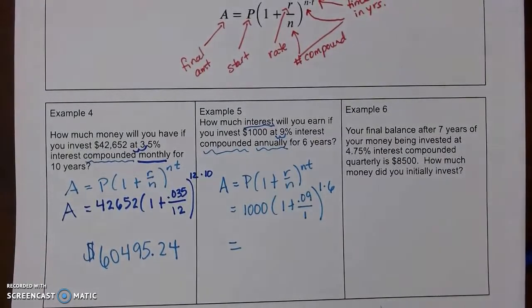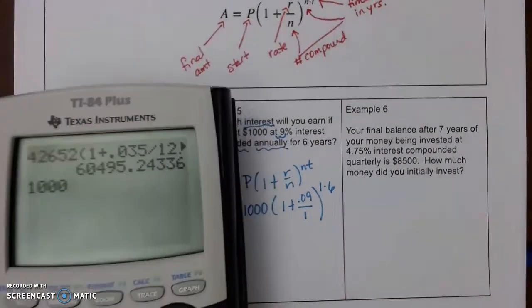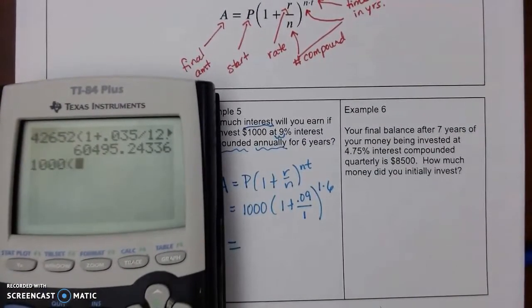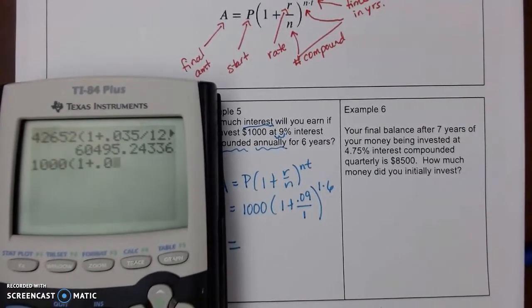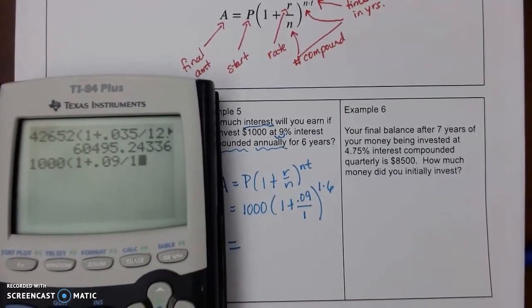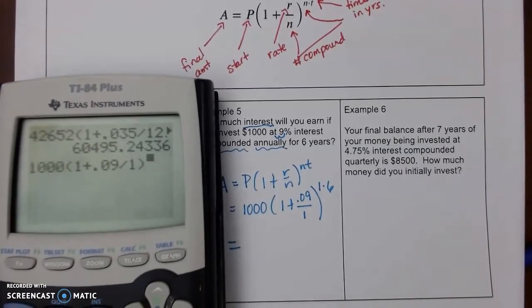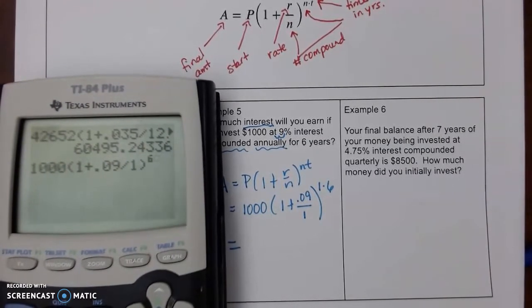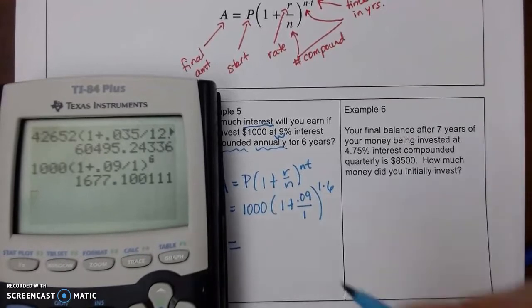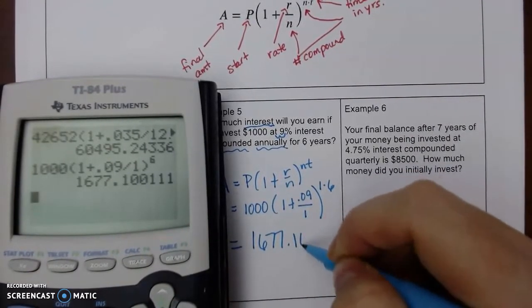So, I'm going to type that in. 1 times 6. And then I don't have to use parentheses. So, I get 1,677.10.